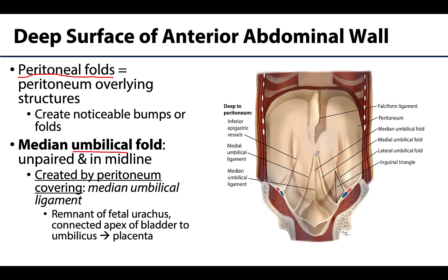The unpaired fold running in the midline is the median umbilical fold, covering the median umbilical ligament. This is the remnant of the fetal urachus, which connected the apex of the bladder to the umbilicus. The remnant of the urachus is left over, and when peritoneum is draped over this structure it creates the median umbilical fold.